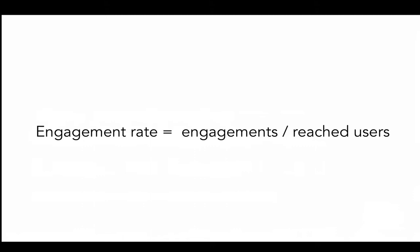What we want to determine is how many of those reached users — how many of those people that we reach — do actually engage. That's how we can tell how engaging a post is and therefore compare it against another post. What's really powerful about the engagement rate is that it doesn't matter how many people were reached on post A versus post B. If we can distill it down to a rate, we can find out how engaging that post is compared to another post.